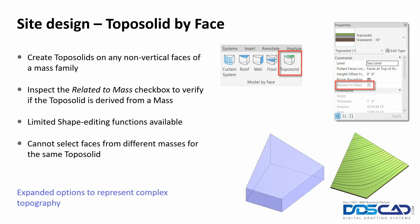Moving on to site design, we have Toposolids by Face. We can create toposolids on non-vertical faces of a mass family. We can inspect the 'Related Mass' checkbox to verify if the toposolid is derived from a mass, which is shown here in the properties. We have limited shape editing functionalities available, and we cannot select faces from different masses for the same toposolid — in other words, we can't create two or three different masses and try to create one toposolid based on them.